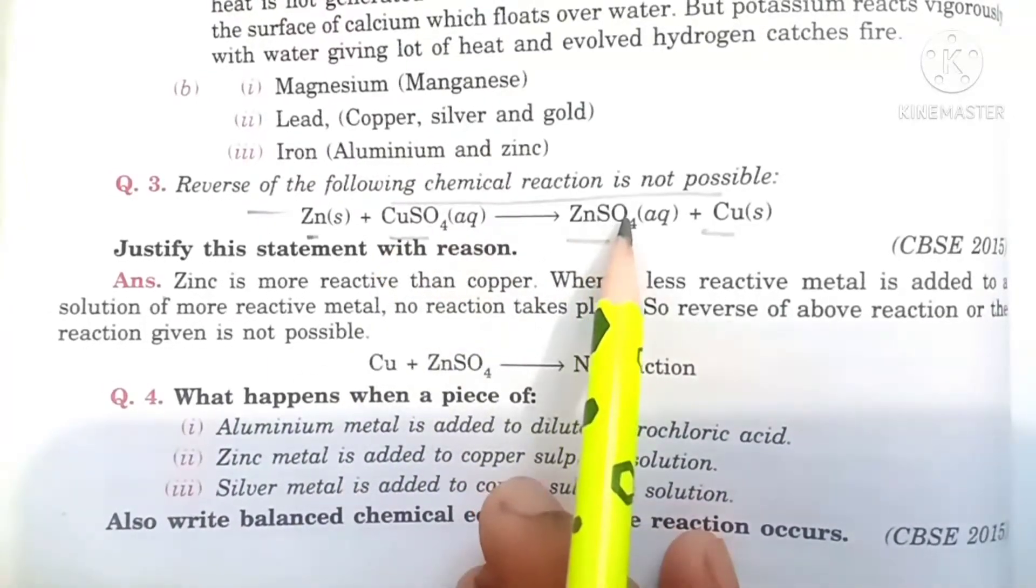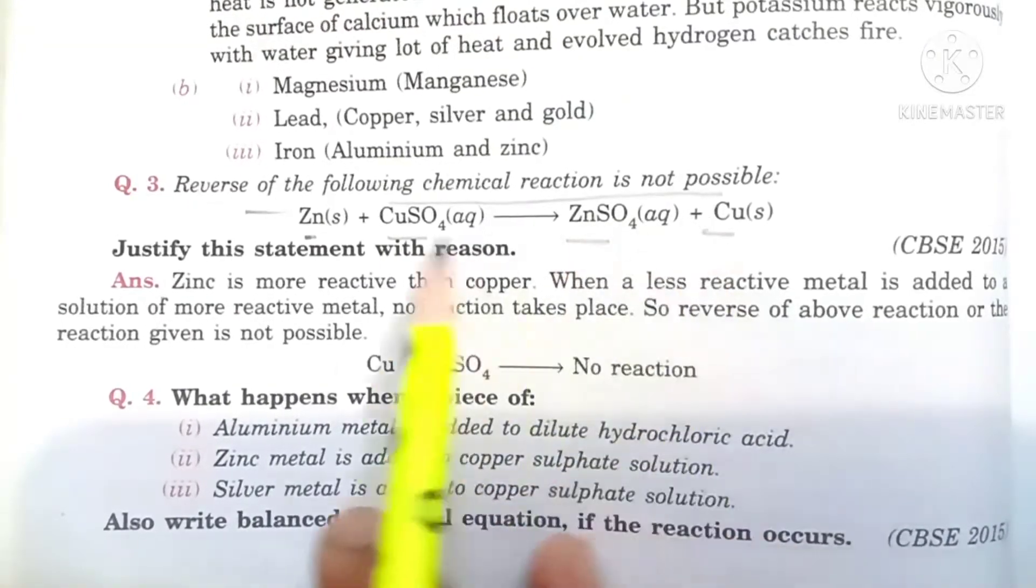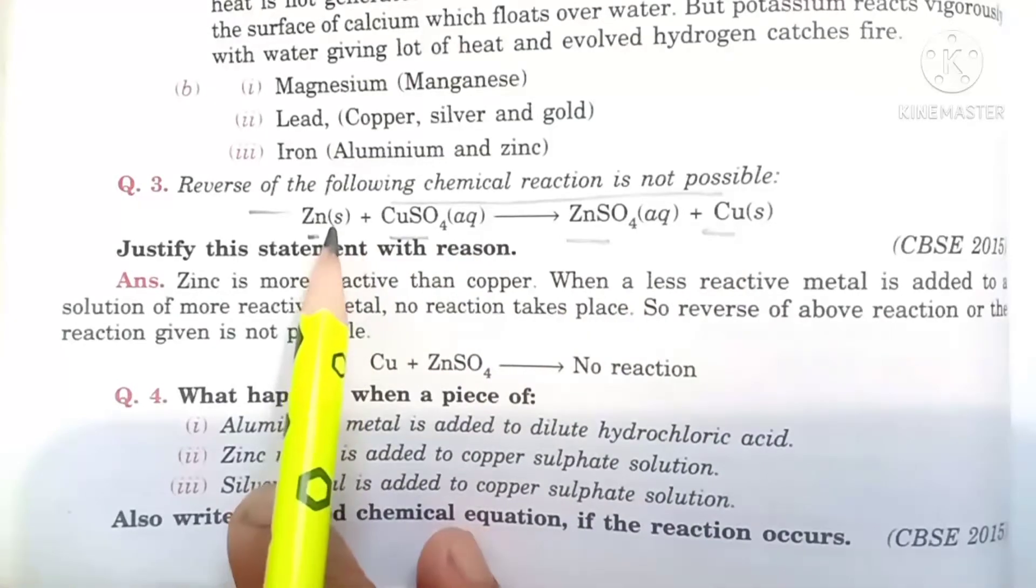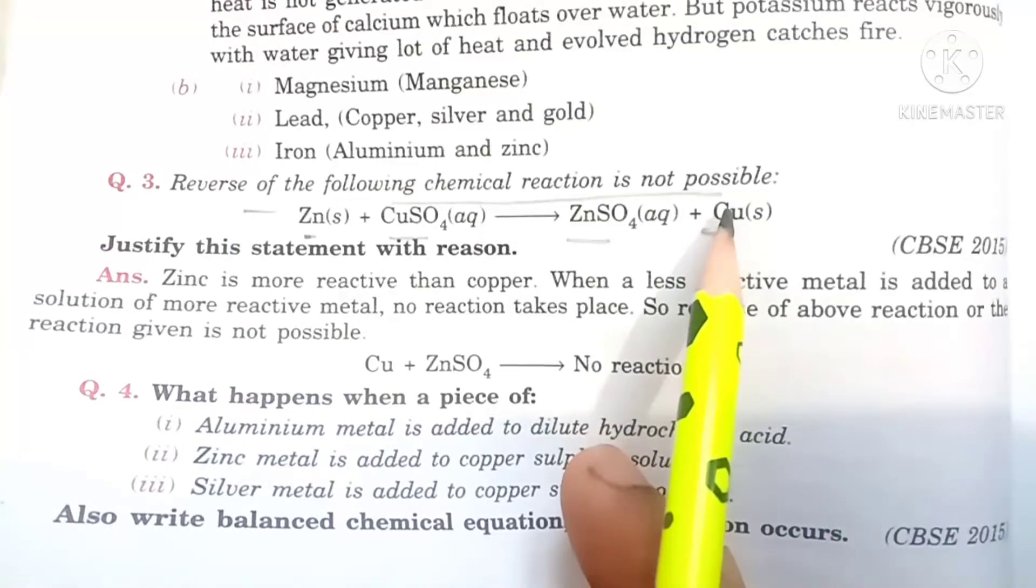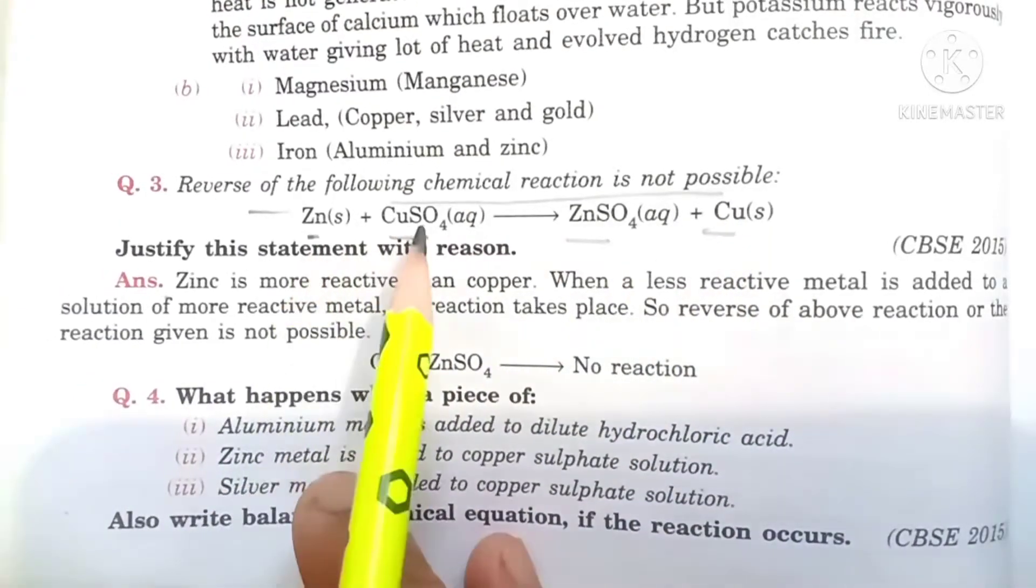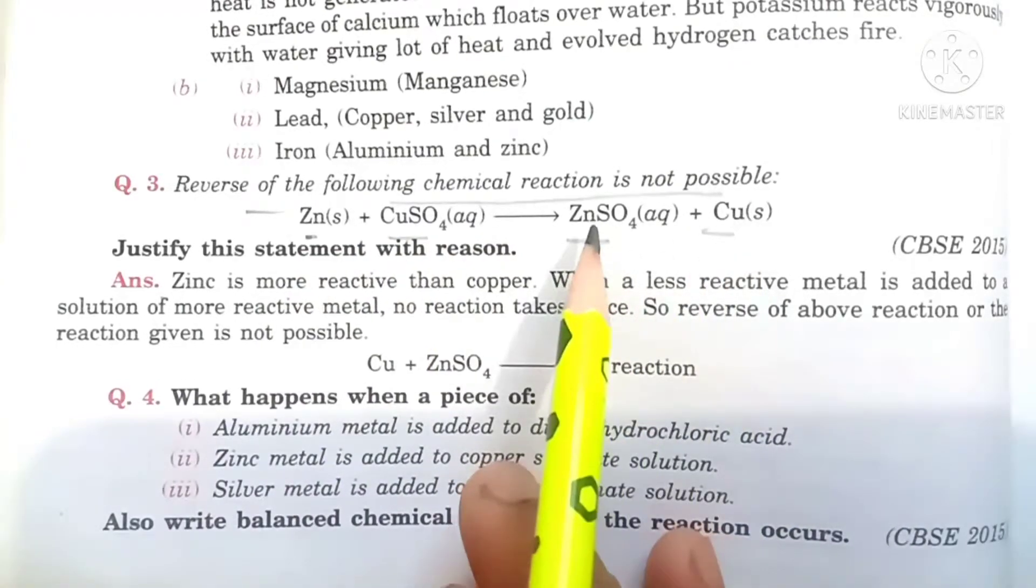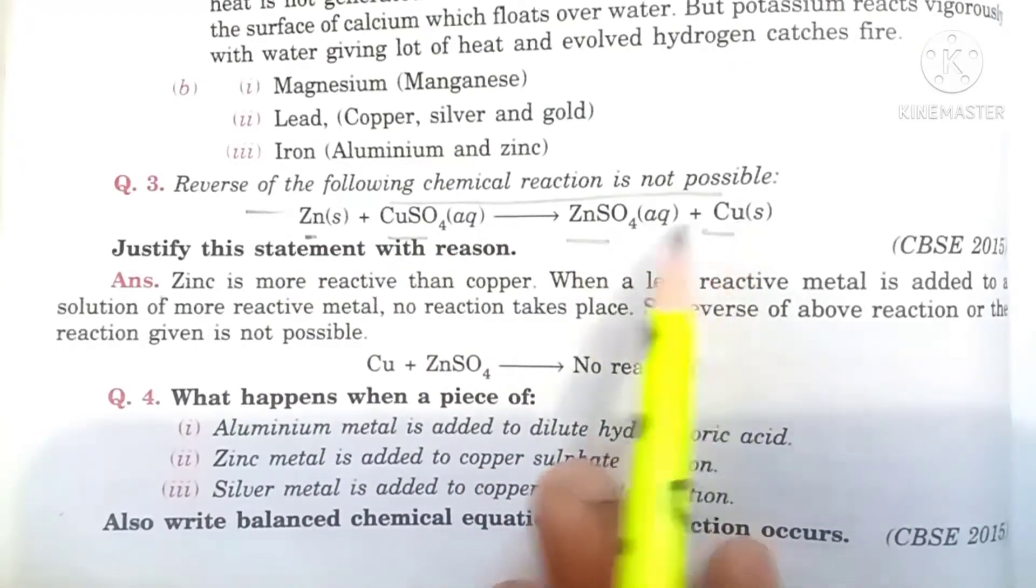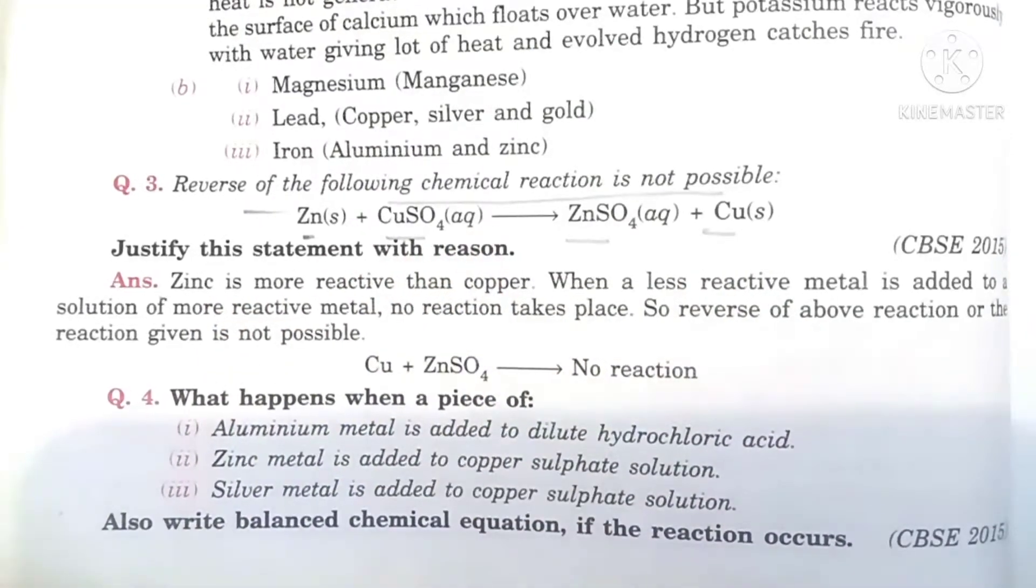If we reverse this reaction, means zinc sulfate and copper side, to find the product is zinc or copper sulfate. We can take them from right hand side, this reaction can be converted by zinc sulfate and copper. Can they react to form a product? Is reverse of this reaction possible?